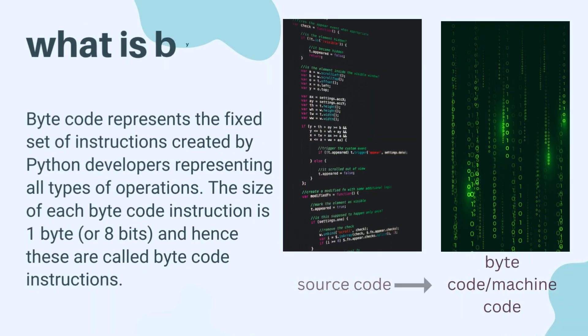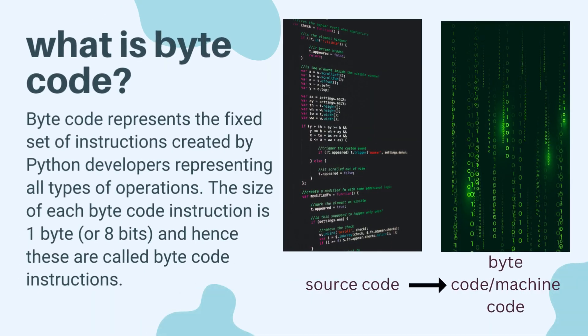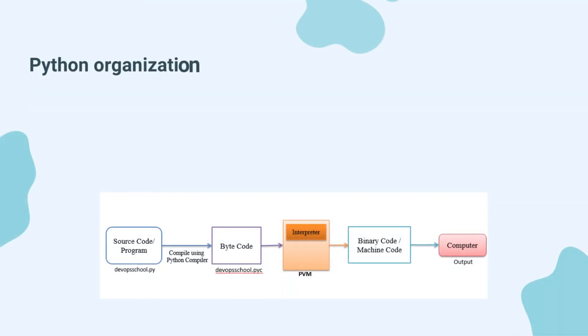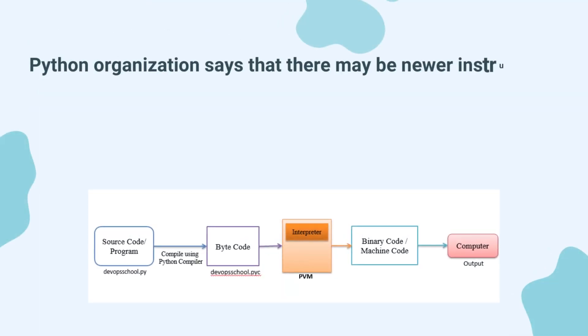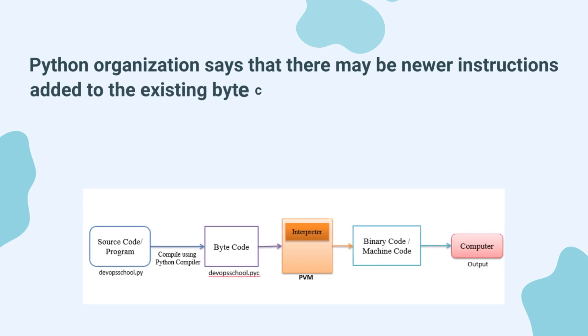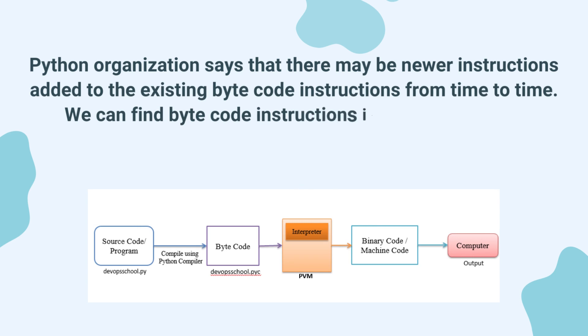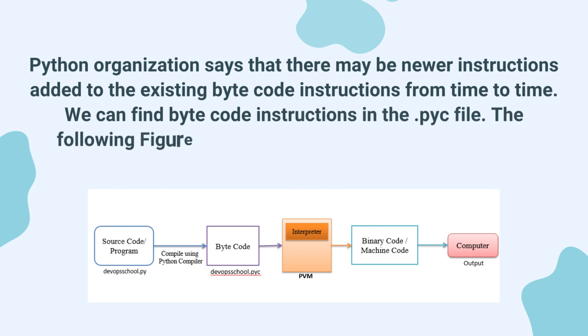What is bytecode? Bytecode represents the fixed set of instructions created by Python developers representing all types of operations. The size of each bytecode instruction is one byte, or eight bits, and hence these are called bytecode instructions. Python organization says that there may be newer instructions added to the existing bytecode instructions from time to time. We can find bytecode instructions in the .pyc file.